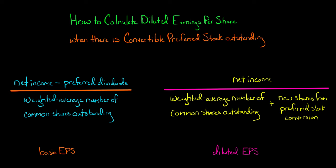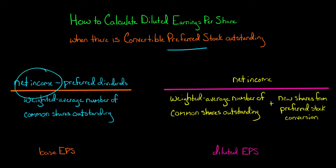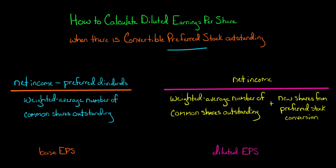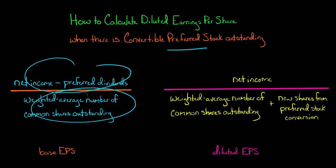In this video I'm going to show you how to calculate diluted earnings per share when there are convertible preferred shares outstanding. If you remember, here's our formula for calculating basic earnings per share: we take a company's net income, subtract any preferred dividends, and divide that by the weighted average number of common shares outstanding during the period.